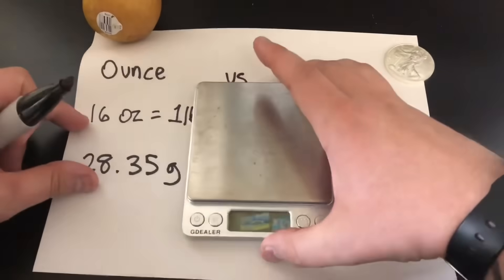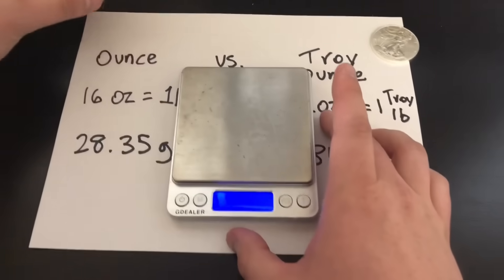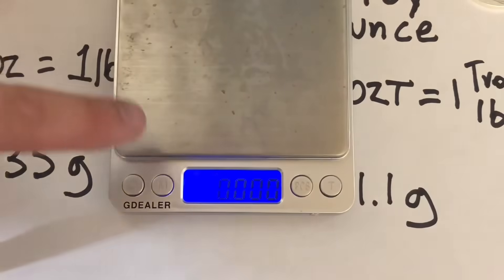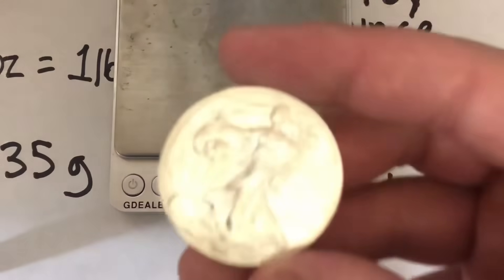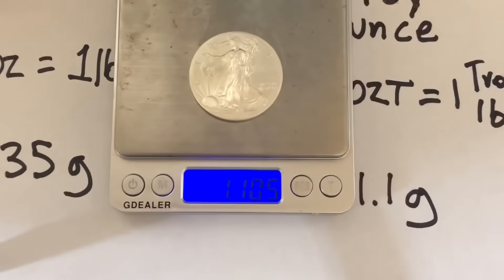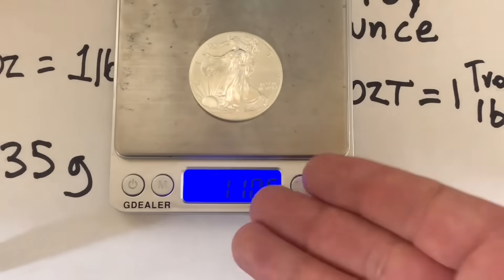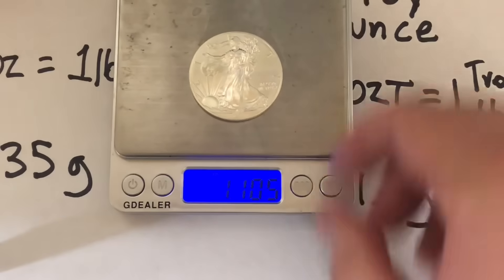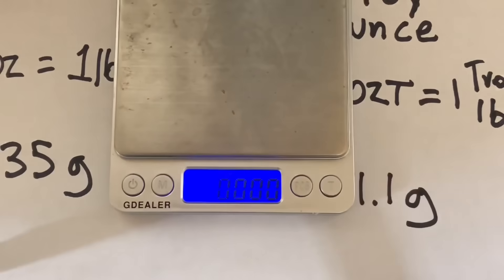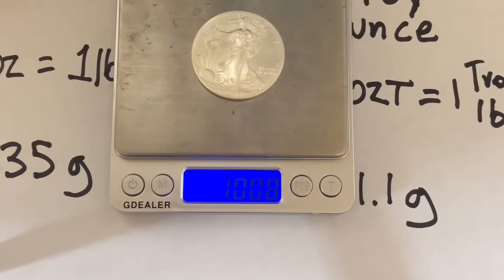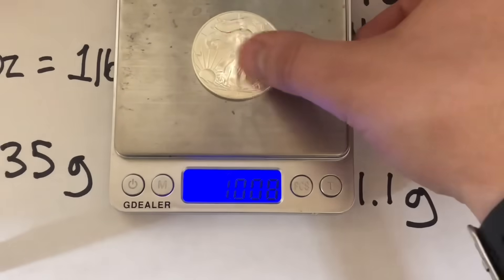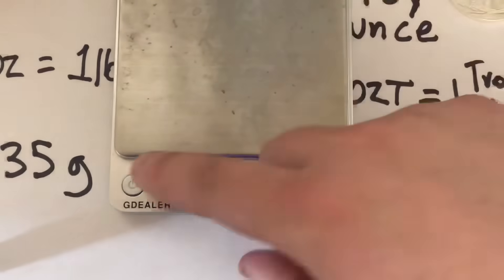Let me get my scale out here and we can show you the difference a little bit better. We have OZ on the scale right now, so we're weighing in regular ounces. We'll get our American Silver Eagle here and see how much it weighs. It weighs 1.1 regular ounces. As I said, troy ounces are about 10% heavier, so you can see that there. And then if we switch it over into troy ounces, it now says OZT. We'll see how much this weighs in troy ounces — 1.008. So just a hair over one troy ounce, which is what it's supposed to weigh. This is a one ounce American Silver Eagle.